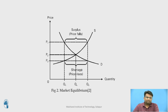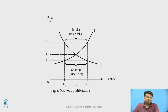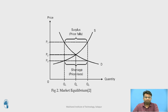At the lower price OP1, the quantity supplied will be OQ1, while the quantity demanded is OQ2. Therefore, a shortage of supply is created at this price, represented by Q1 and Q2. This shortage tends to put upward pressure on the price, and the market price is expected to rise. There is only one price at which quantity supplied and quantity demanded are equal — no surplus, no shortage, no rise or fall in price — which is called OP. This is referred to as the equilibrium position.